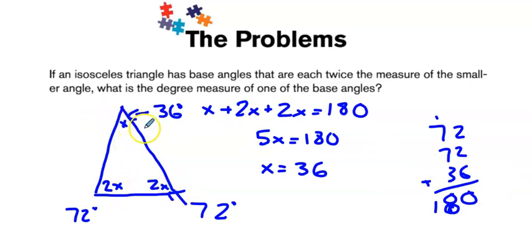Our base angles are each 72, which is double our smaller angle, and so our final answer is that our base angle is 72 degrees.